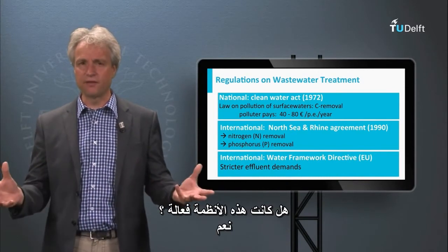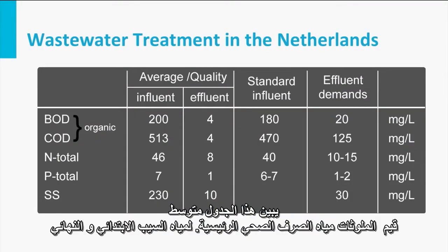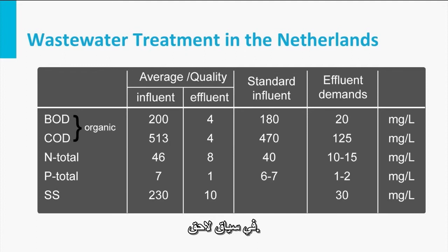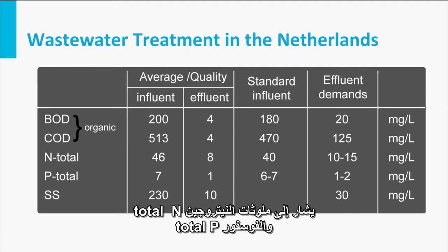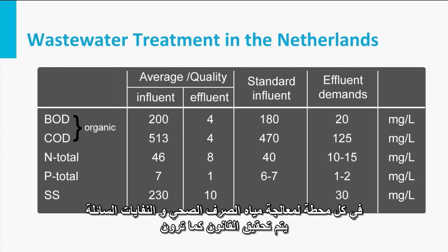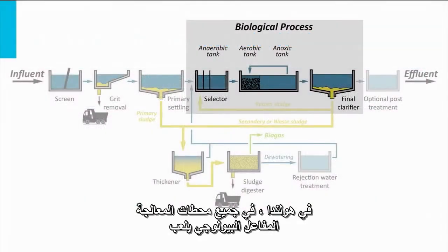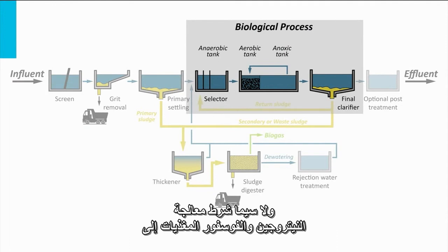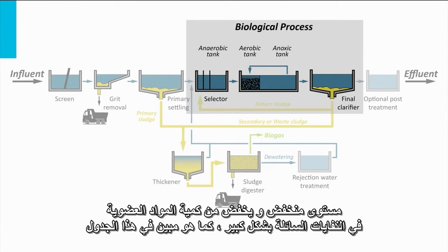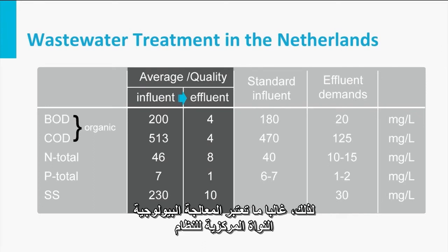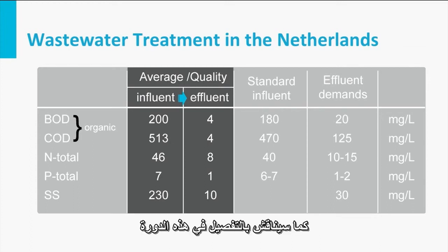And were these regulations effective? Well, yes! This table shows the average influent and effluent values of the major sewage pollutants. The organic pollutants are indicated by the parameters COD and BOD, which will be explained later in the course. Nitrogen pollutants are indicated as total N, and phosphorus as total P. The settleable solids are termed as SS. In every sewage treatment plant, the effluent restrictions are met. In the Netherlands, the biological reactor plays a central and crucial role in meeting the requirements, particularly for treating nutrients nitrogen and phosphorus to a low level and decreasing the amount of organic matter in the effluent. Therefore, biological treatment is often considered the central core of the system and will be discussed in detail in this course.